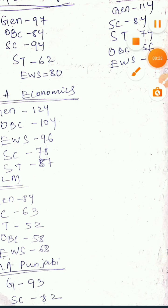For MA Pharmacy — Pharmacology: General cutoff is 98, OBC is 82, SC is 70, ST is 90, EWS is 78.